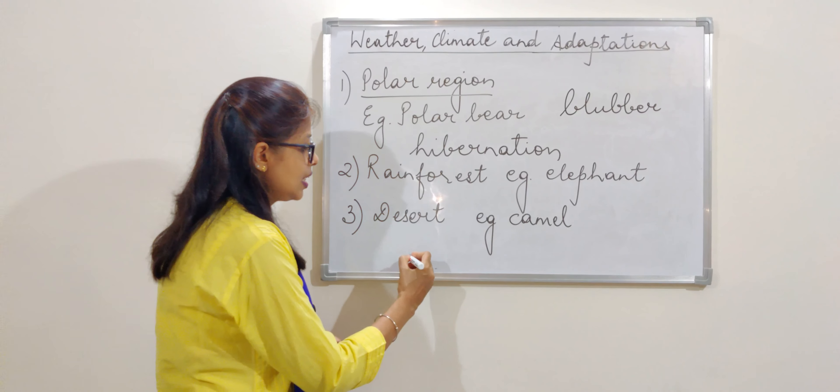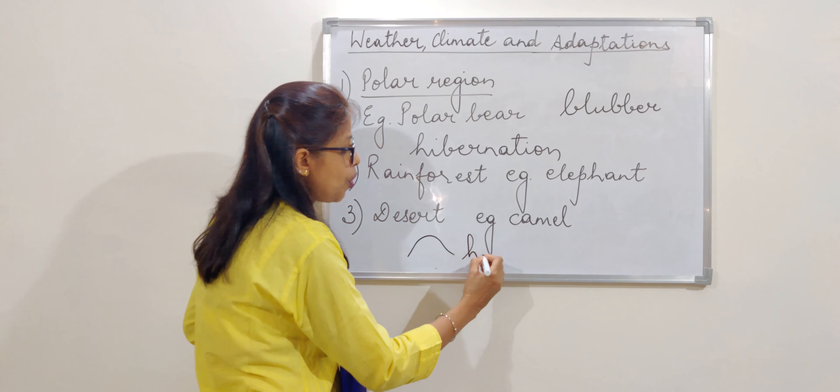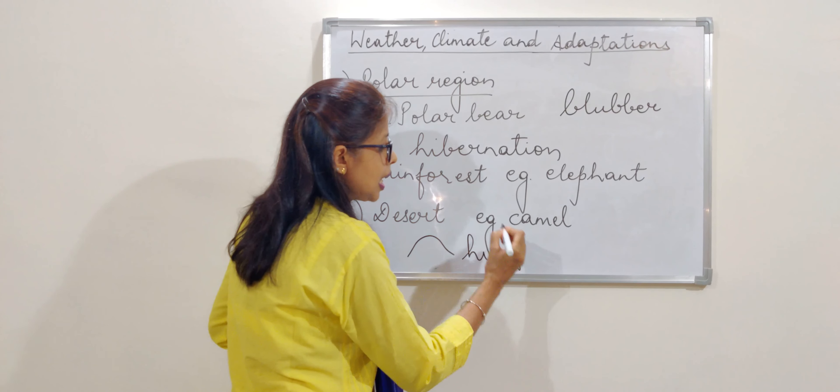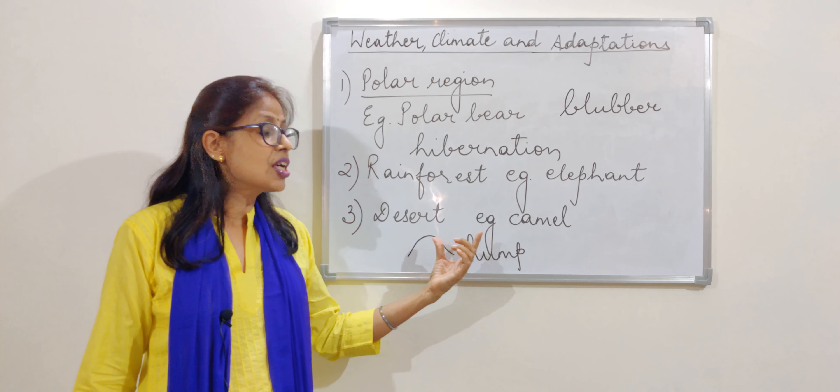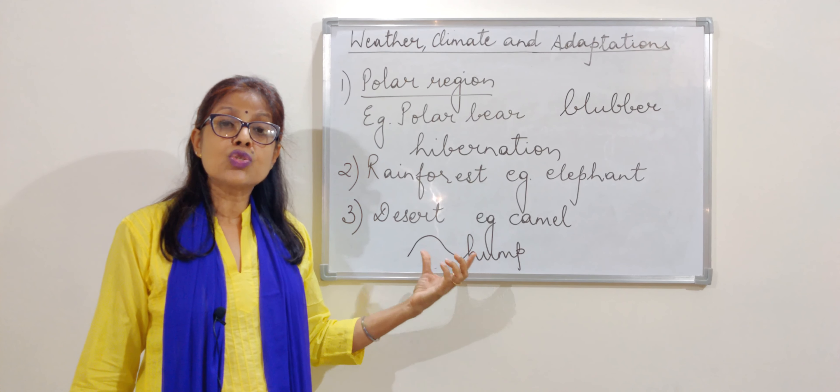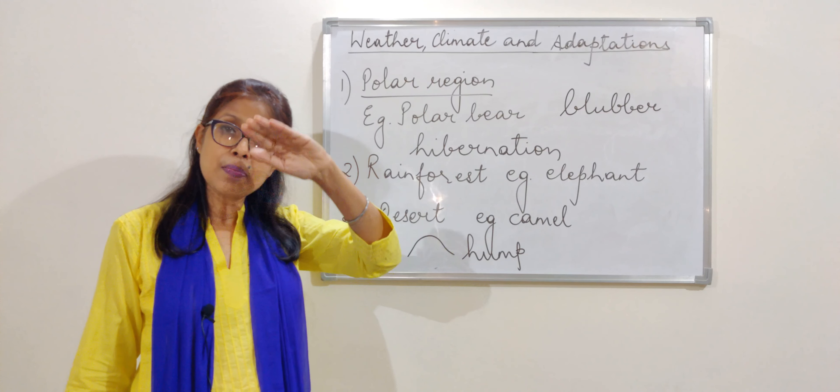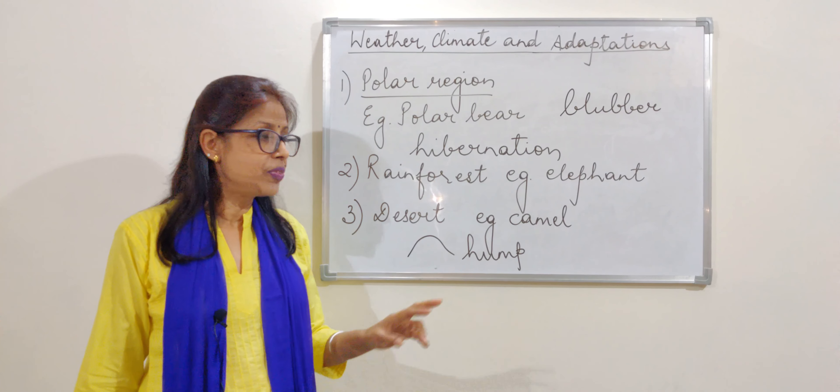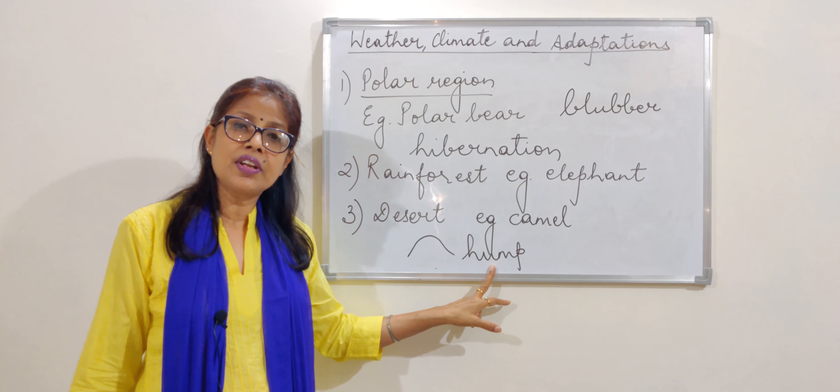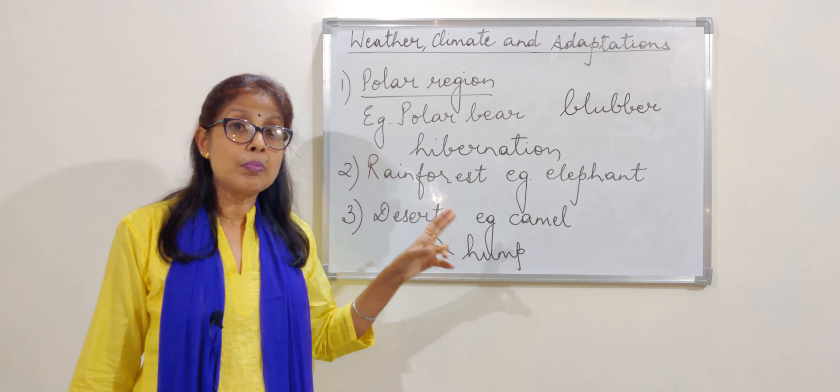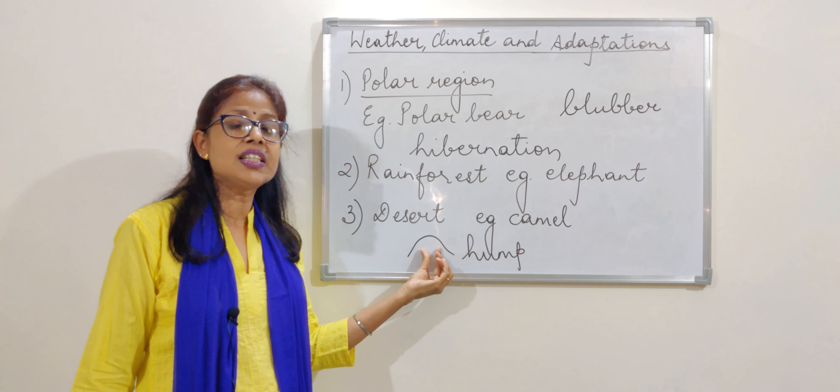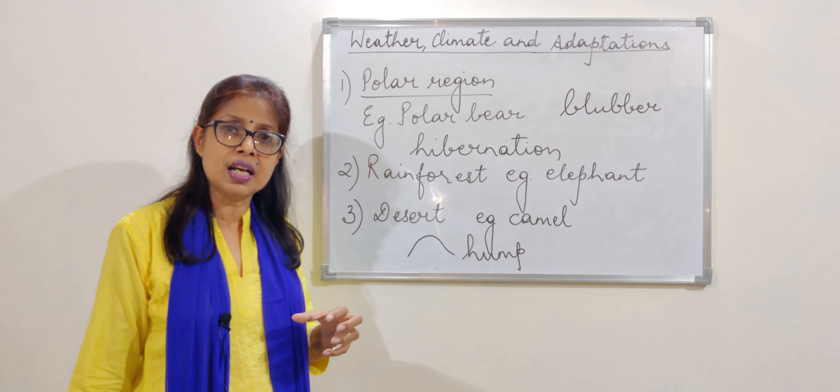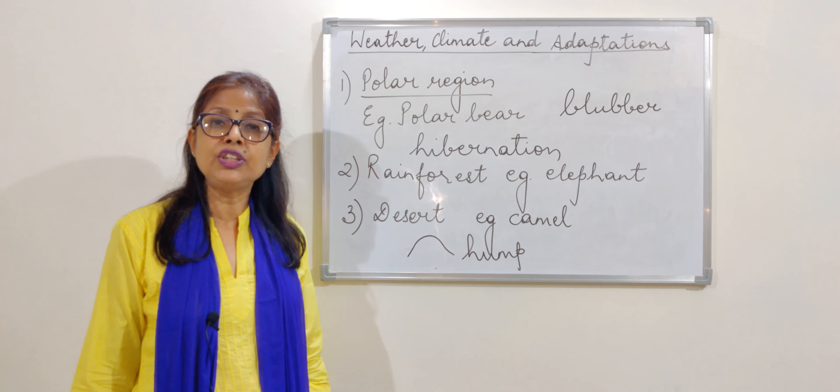But another important thing, we have seen that there is a hump on the back of the camel. This hump is actually the place where they store the fat. Whenever they require the amount of food and water, this fat in the hump melts down and is supplied to the camel and its body.